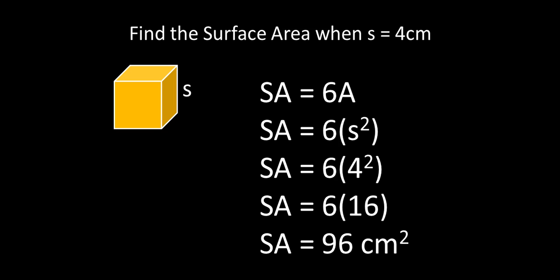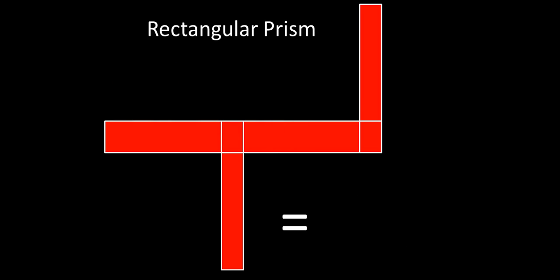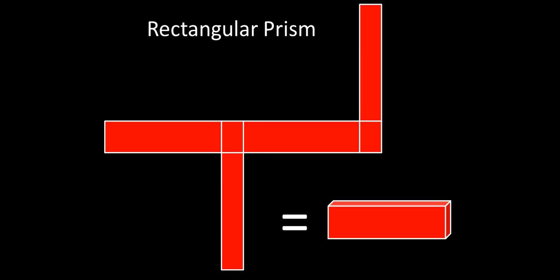We're going to move into rectangular prisms now. They are a little bit more complicated, and they can look kind of funky like this picture you see here. If you fold it all up in the right way, you'll get something that's a rectangular prism. It looks like this. The equation's a little bit more complicated for a rectangular prism because there are different sized rectangles. You can see them there.